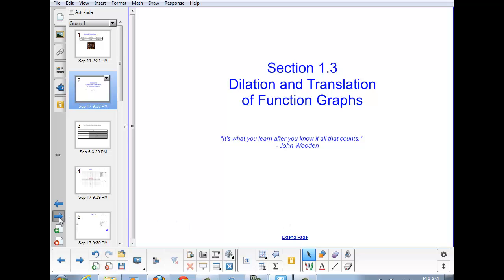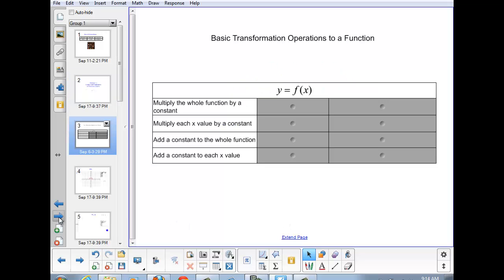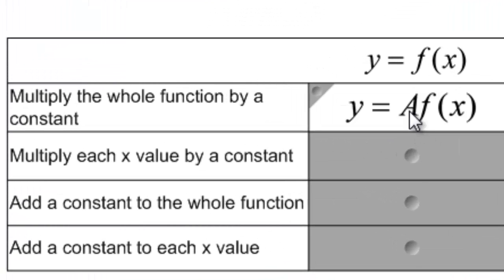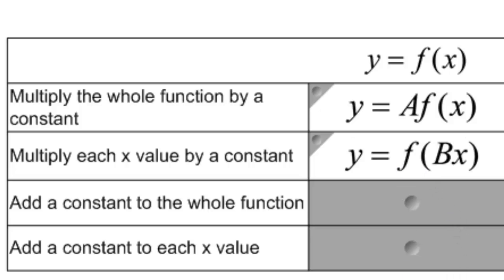For each of those operations, we can apply them in two different ways. If we start with a basic function y = f(x), we could multiply the whole function by a constant — y = a·f(x) — or we could multiply each x value in the equation by a constant — y = f(b·x).